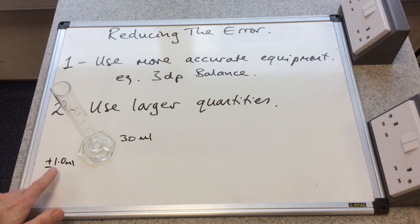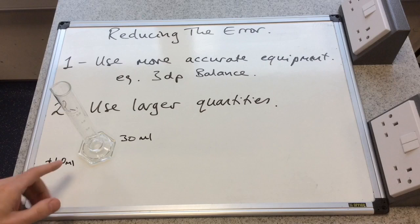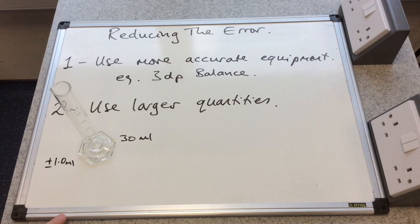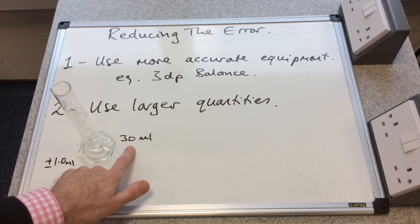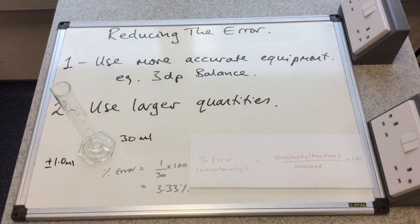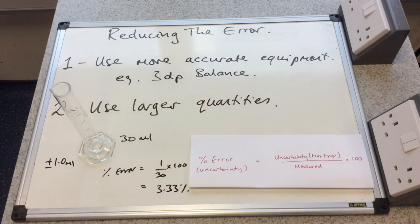So I'll just use this measuring cylinder to make this point. So it's the one I showed at the start. It's got the plus or minus 1 milliliter uncertainty. And let's say we're going to use it to measure out 30 milliliters of acid, for example. So plugging those numbers into the formula, we get an error, or a percentage error, of 3.33%.